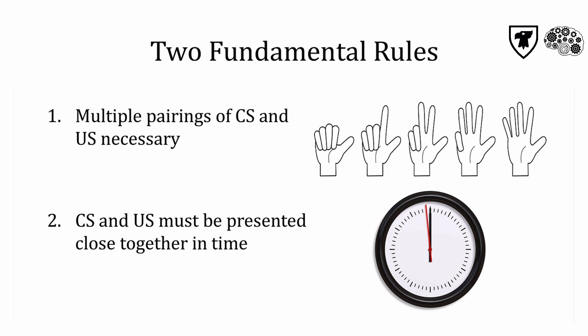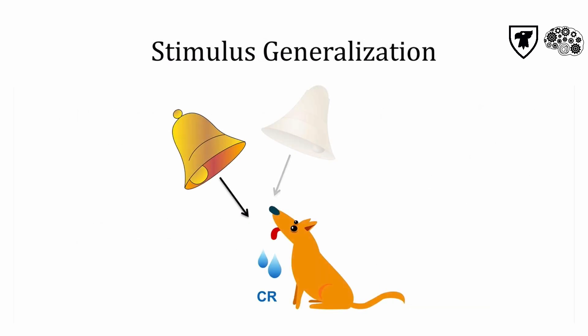Classical conditioning can change once it's established in ways that reveal what is going on in the mind of the learner. Stimulus generalization occurs when stimuli similar to the CS will also trigger the learned behavior, even though these specific stimuli have not been previously paired with the US. It can reveal the types of things an individual finds similar, which is really handy in determining the sensory abilities of individuals who cannot speak, such as animals and babies.